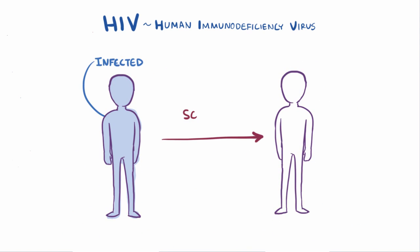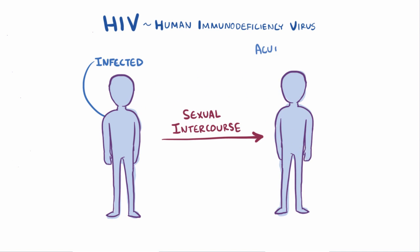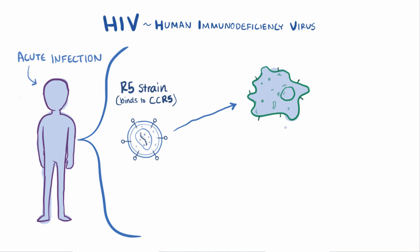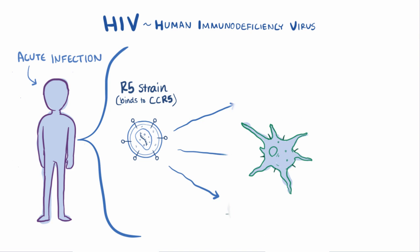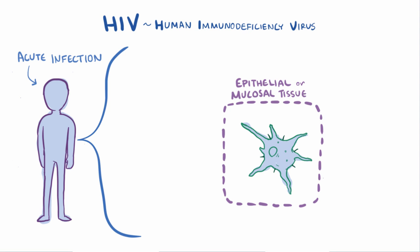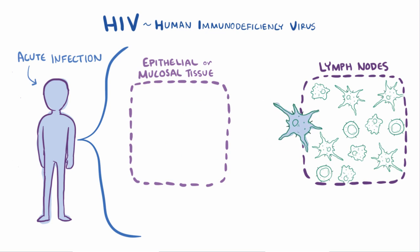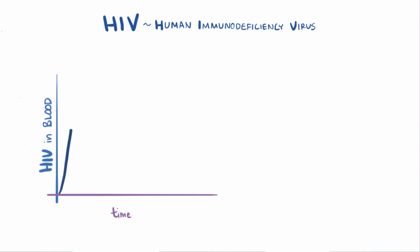So let's start with HIV entering the body through sexual intercourse, which is how it typically spreads from person to person. At this early point during what we call acute infection, the R5 strain of HIV, which binds mainly to the CCR5 coreceptor, will get into macrophages, dendritic cells, and T cells. Usually, dendritic cells hanging out in the epithelial or mucosal tissue where the virus enters captures the virus and migrates to the lymph nodes, where a lot of immune cells live. The R5 strain of HIV essentially has a field day, infecting T helper cells, macrophages, and more dendritic cells, which leads to a big spike in HIV replication and the amount of virus found in the patient's blood.